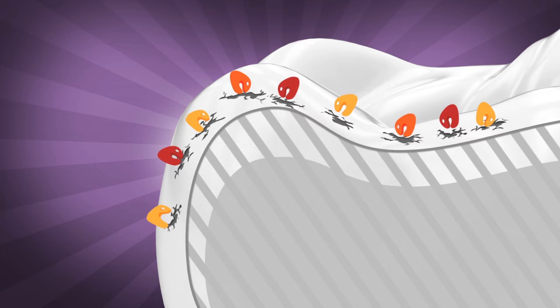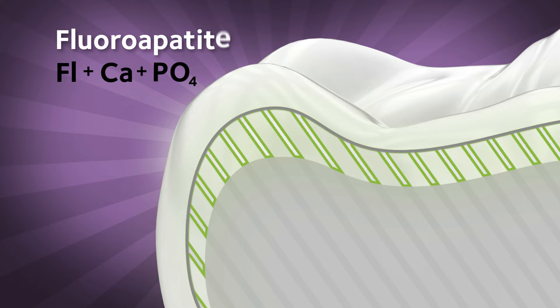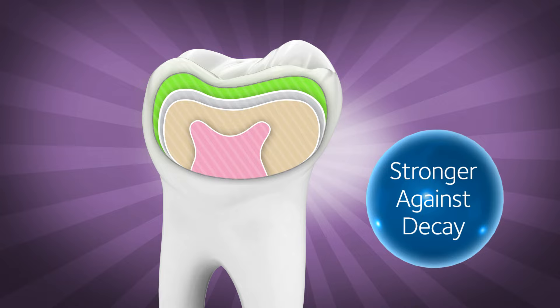Fluoride is very important in this battle. When fluoride is in your mouth, it actually gets into the enamel through the remineralization process and forms a new super cavity-fighting compound called fluoroapatite. Fluoroapatite is much stronger and resists decay much better than hydroxyapatite.